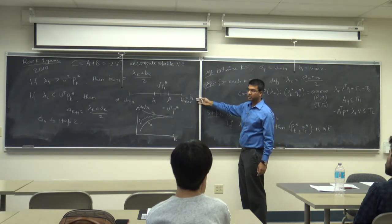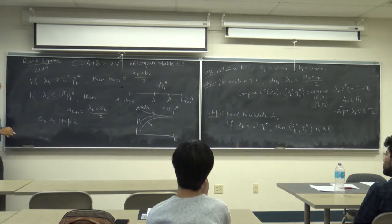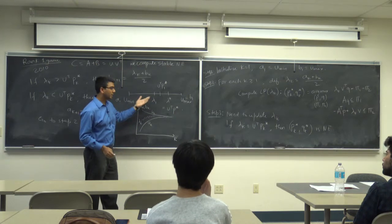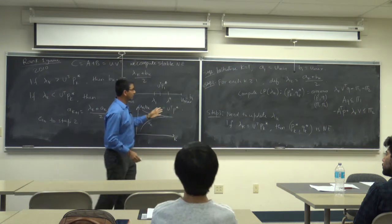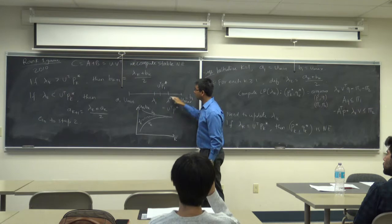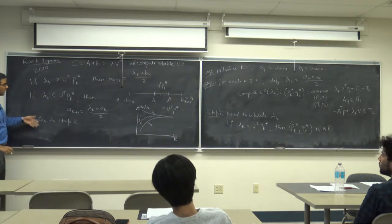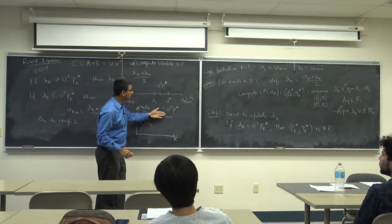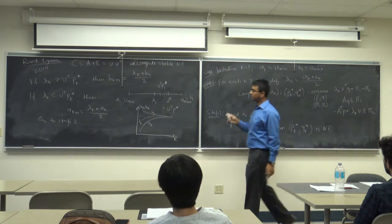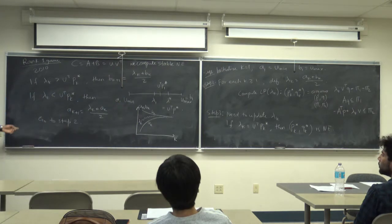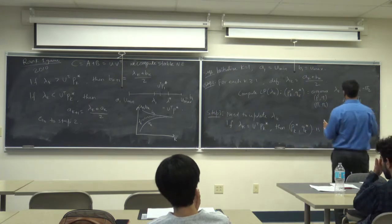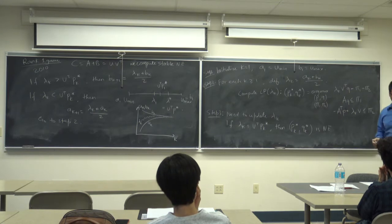The authors mapped the original problem to a bisection problem over an interval [U min, U max] of the real line, parametrizing the linear program by the scalar lambda_k. Running this algorithm, a_k and b_k converge, meaning lambda_k converges to lambda star, which equals P star transpose U. This is an exact algorithm for rank 1 games, running in polynomial time, requiring only a linear program solve at each step.